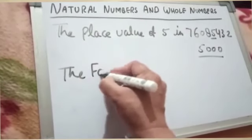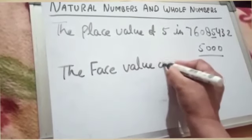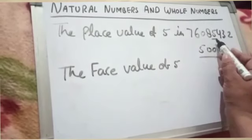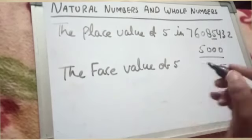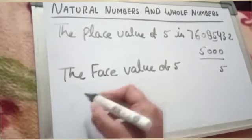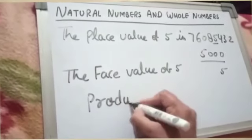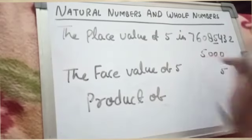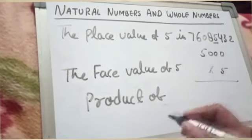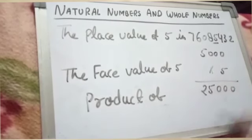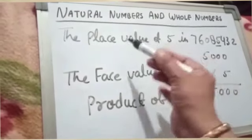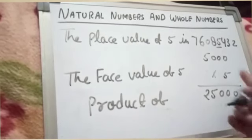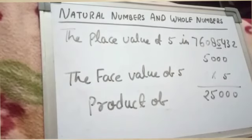The face value of 5 in this number is 5, because the face value is the digit itself. Now we take the product of the place value and face value of 5. This is 5,000 multiplied by 5, which equals 25,000.